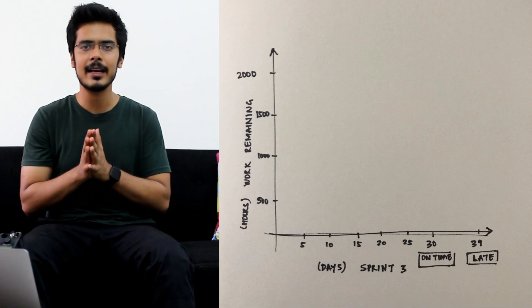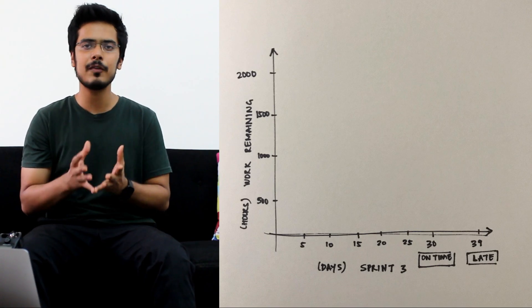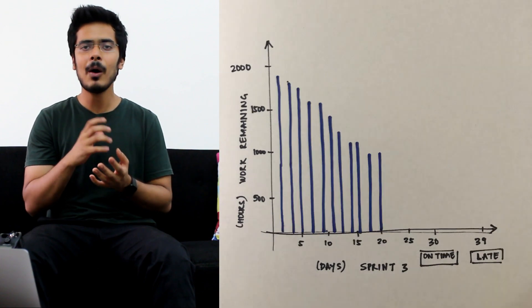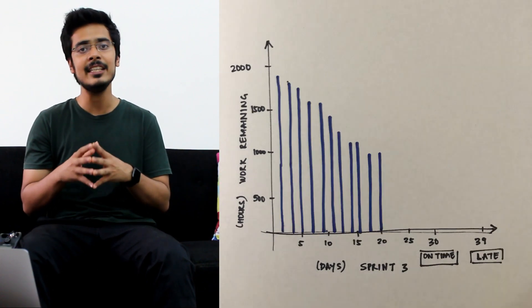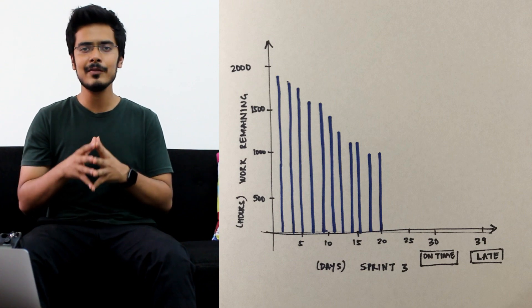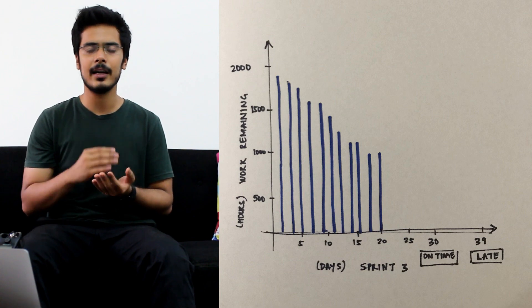Now as the days progress, every member in the team working on any of the user stories uses any software to start logging the amount of work remaining for their user story to complete at the end of each day. Now at the end of the day when all the developers have basically logged their work, you get to know the amount of work done.